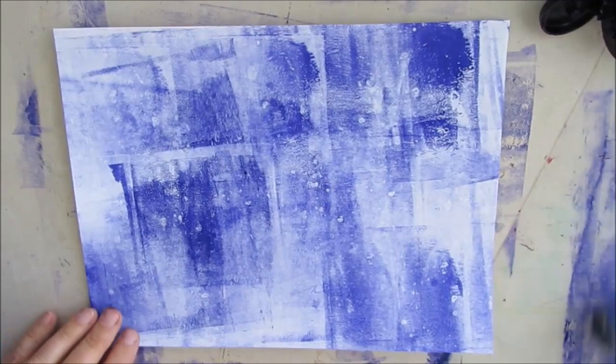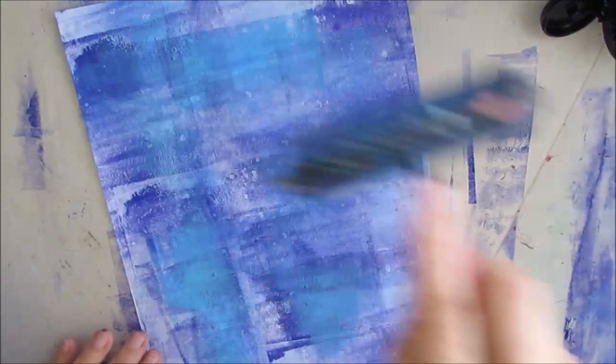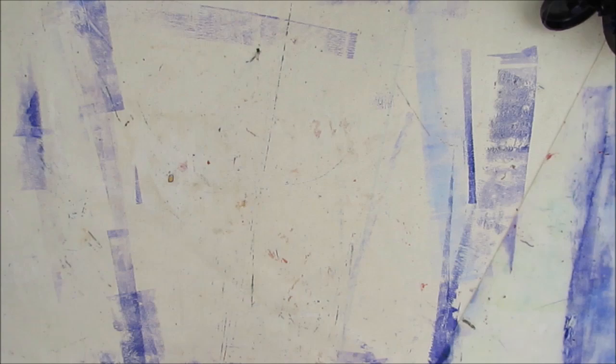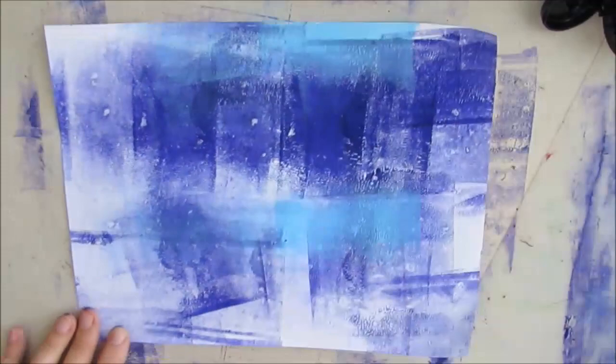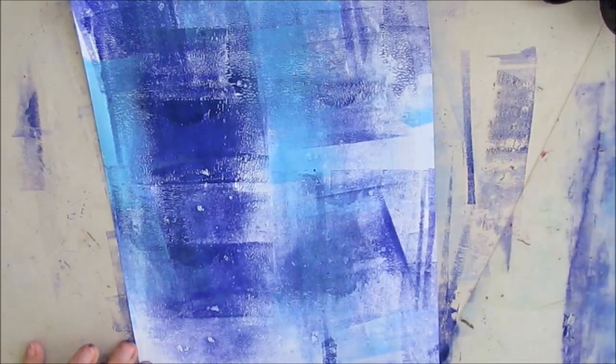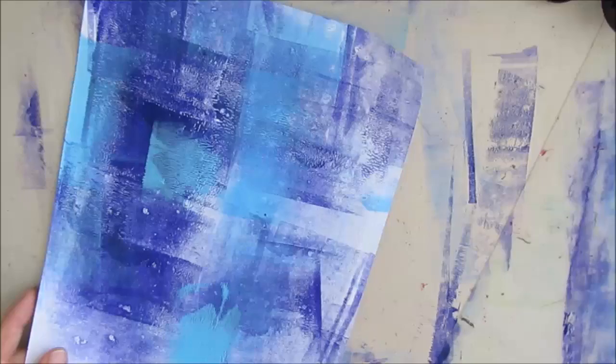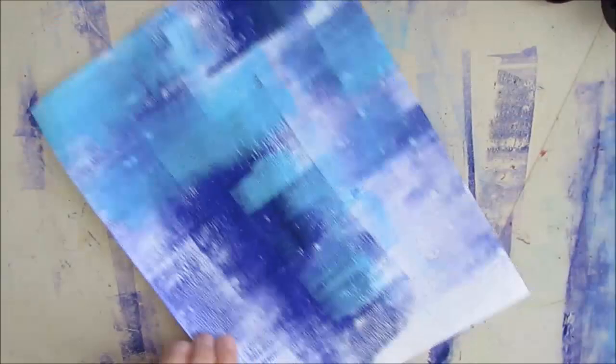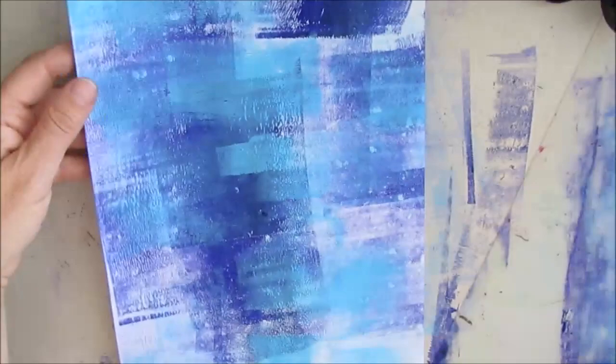When you're doing this, experiment with different colors and combinations. Sometimes I'm putting the Diox Purple first, sometimes the Light Blue Permanent, layering white in between, and you can put as many layers or as few layers as you want. Once you've got the paint out and the mess going on, you might as well make more backgrounds. It can always go into your stash.